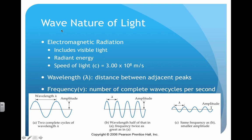Another important terminology related to waves is wavelength, shown with a lambda. Wavelength is the distance between adjacent peaks. Frequency is the number of complete wave cycles per second. Here you can see the parts of a wave — those of you who have taken math already probably know this — so we have wavelength and amplitude, and notice the difference in frequency.